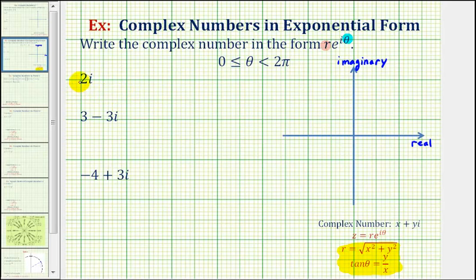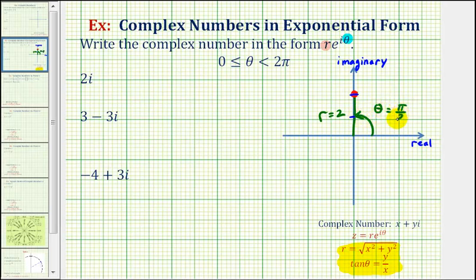Let's plot the number 2i on the complex coordinate plane. Because 2i is an imaginary number, it's going to be on the imaginary axis up two units. The length of this segment would be the radius, which is two. The angle theta, measured from the positive x-axis, would be pi over two radians. So 2i written in exponential form is two times e raised to the power of i times pi over two.